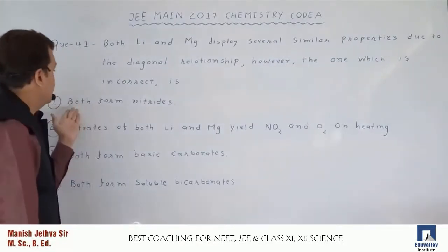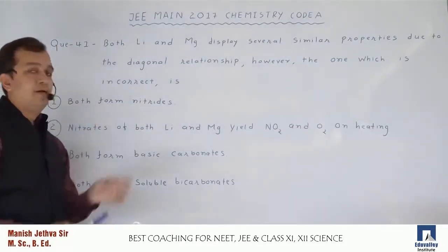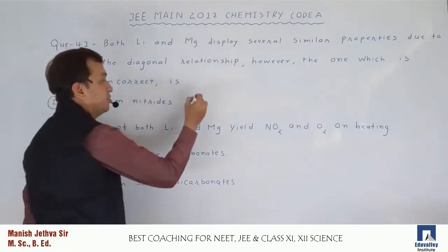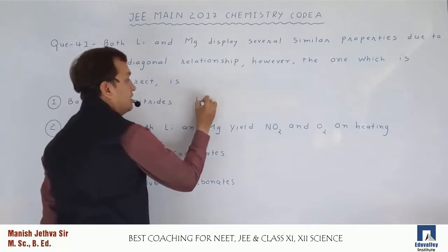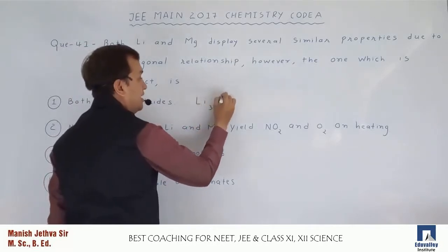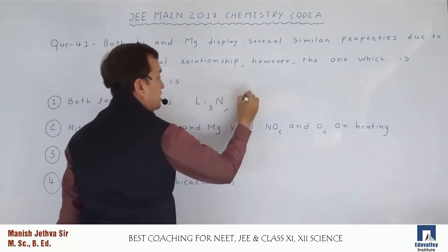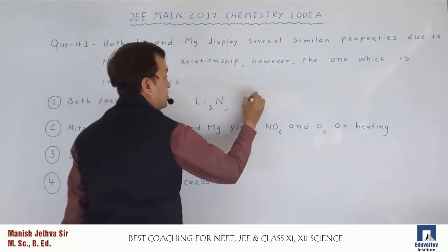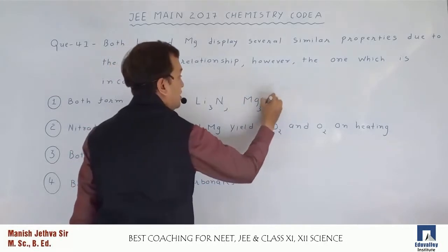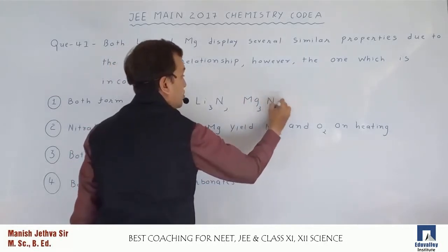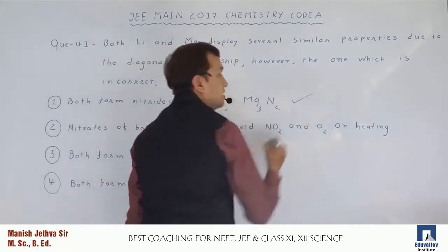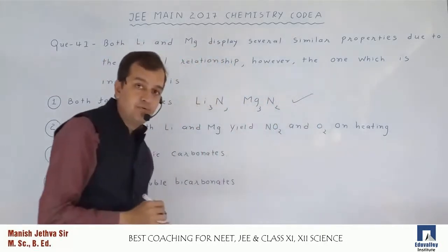The first option is: both form nitrides. Lithium can make Li₃N type of nitrides and magnesium can make Mg₃N₂ type of nitrides. So this option is correct.